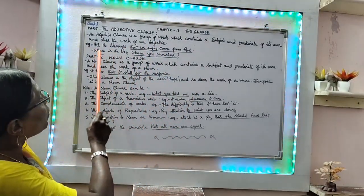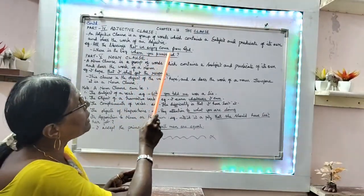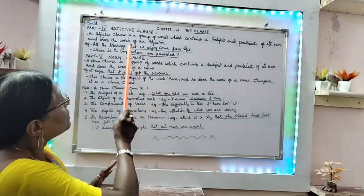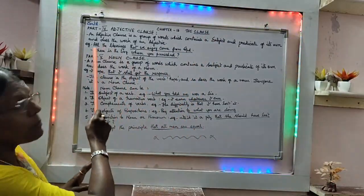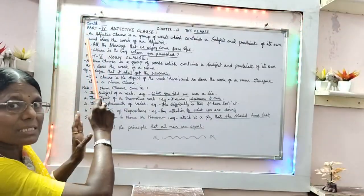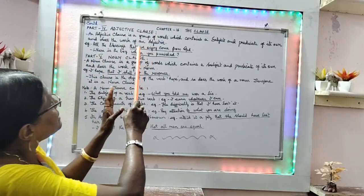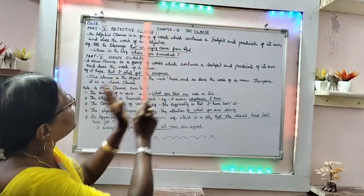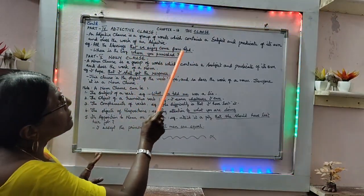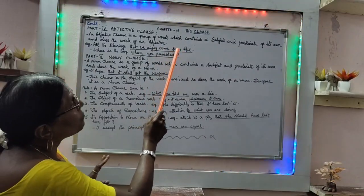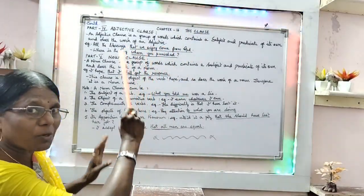Example: 'All the blessings that we enjoy come from God.' Here, 'that we enjoy come from God' — 'all the blessings' is the noun being modified. 'That' is the adjective, and 'that we enjoy' is the adjective clause — it is the adjective subordinate clause.